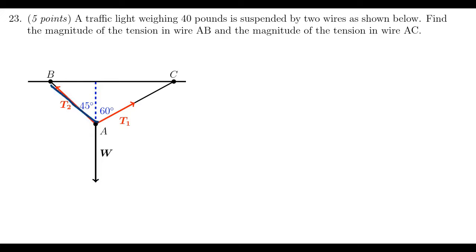So there's AC and AB, tension 2 and tension 1. So we need to find those things. So how are we going to do this? Since the traffic light is not accelerating towards the earth and not moving at all, it's in a state of static equilibrium.